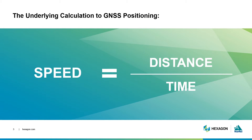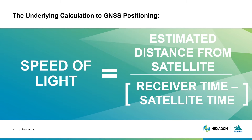To determine your location, this is the basic equation you need: speed equals distance divided by time. When using this formula, we're solving for distance. Speed is always going to be the speed of light — that's how quickly a signal is sent from a satellite. The time is how long it took for the signal to reach the receiver. We calculate this based on the receiver's timestamp when it receives the signal, minus the satellite's broadcast timestamp. Once we have these pieces, we can solve for our distance from the satellite.